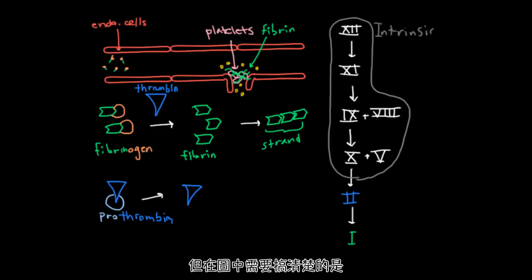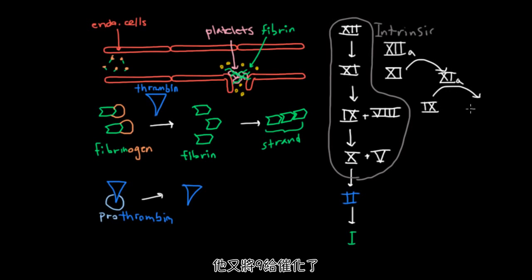But what's perhaps more important to be clear about is that in this drawing, 12 is not actually becoming 11, and 11 is not actually becoming 9. What's happening is that 12, when it's activated, is a catalyst to convert 11 from its inactive form into its activated form, which will draw 11a. And then once 11 is activated, it serves as a catalyst to convert 9 from its inactivated form into its activated form. And so you see that these arrows are actually more about catalyzing.